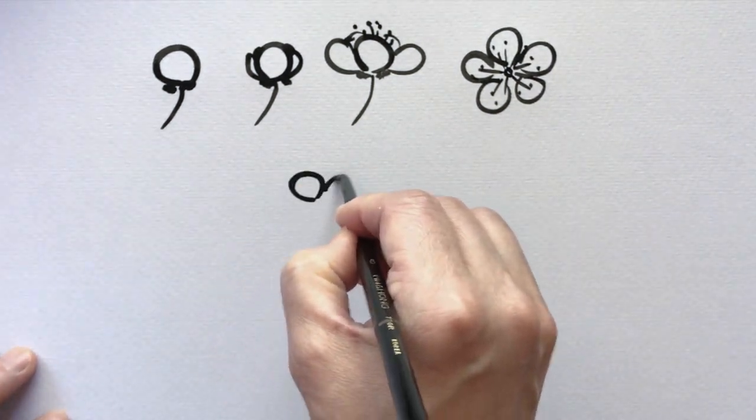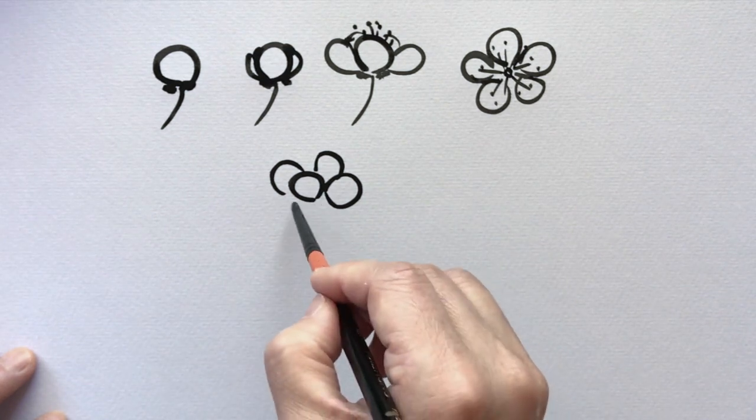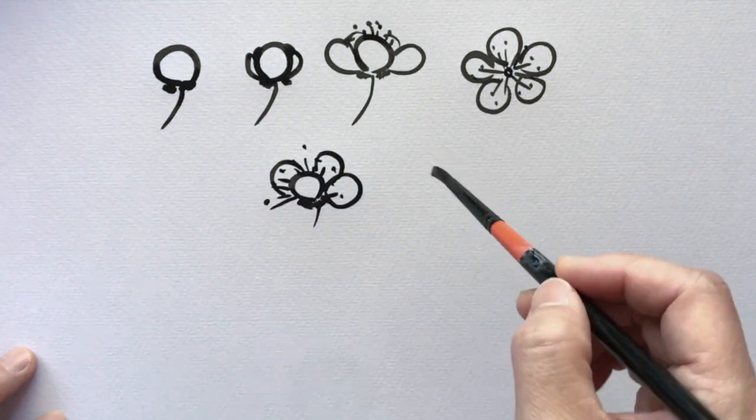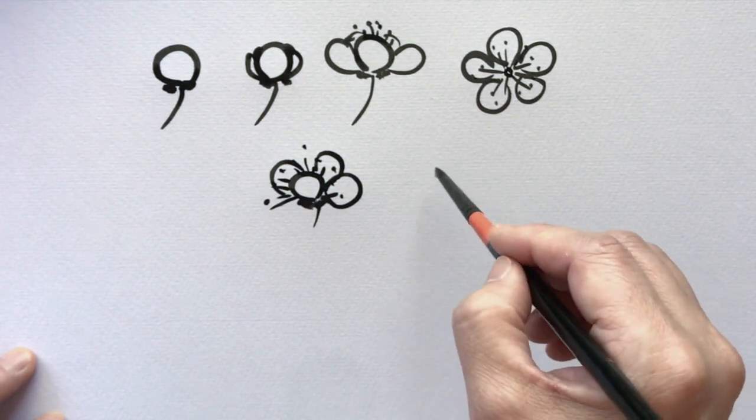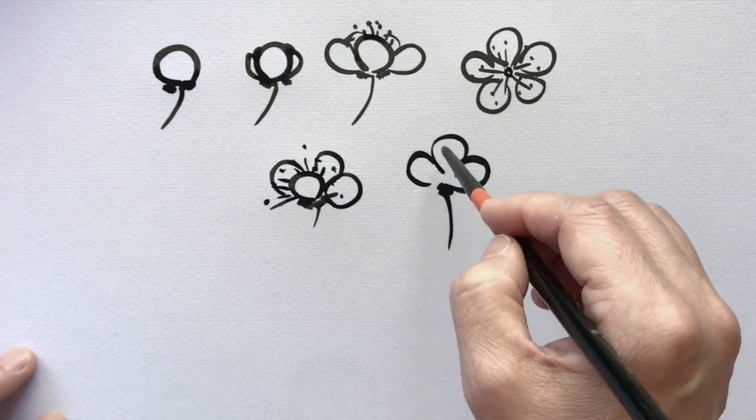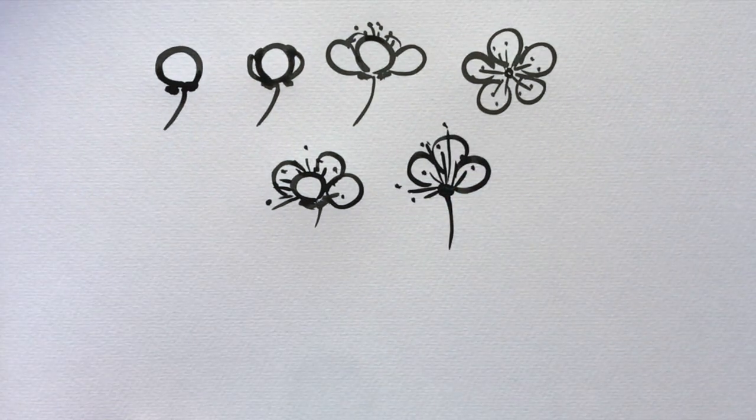Now, after all the petals have bloomed, maybe a wind came by and took one of the petals off. Now, you can see the insides just a little bit more. Now, another wind came by, poor flower, and took off another petal, leaving three.